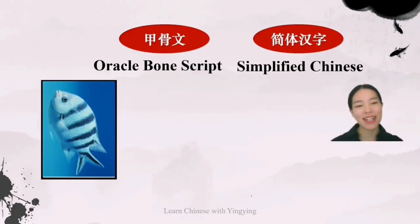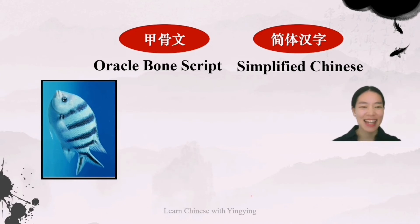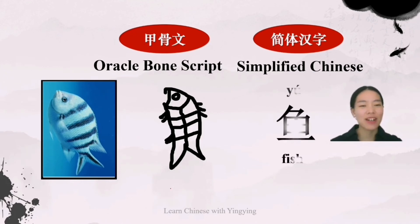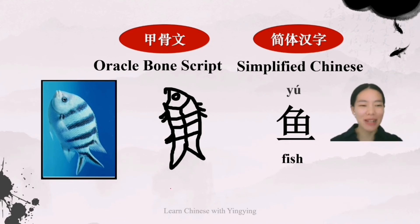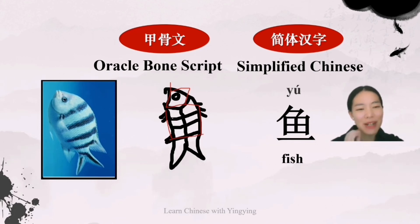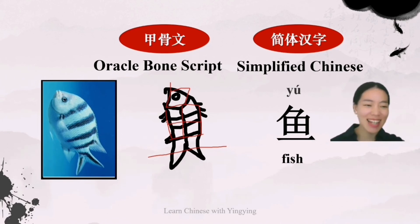The last word we are going to learn is 鱼 (yú). It means fish. How would you sketch this cute one? Let's look at the oracle bone script — I believe this is quite a truthful sketch of the fish. And then this is our simplified Chinese, pronounced as 鱼 (yú). It means fish. I believe you can see the strong connection between these two. Here is the head of the fish and the body, which is a square — you can see it simplifies into a square. All the bones inside are simplified into a cross, and the tail is simplified into a horizontal line.